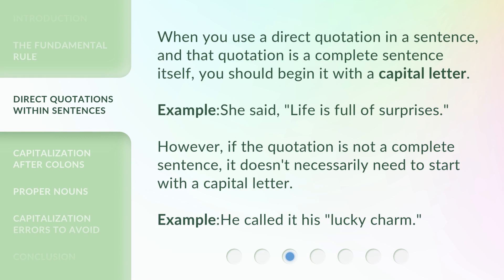When you use a direct quotation in a sentence, and that quotation is a complete sentence itself, you should begin it with a capital letter. Example: She said, 'Life is full of surprises.' However, if the quotation is not a complete sentence, it doesn't necessarily need to start with a capital letter. Example: He called it his lucky charm.